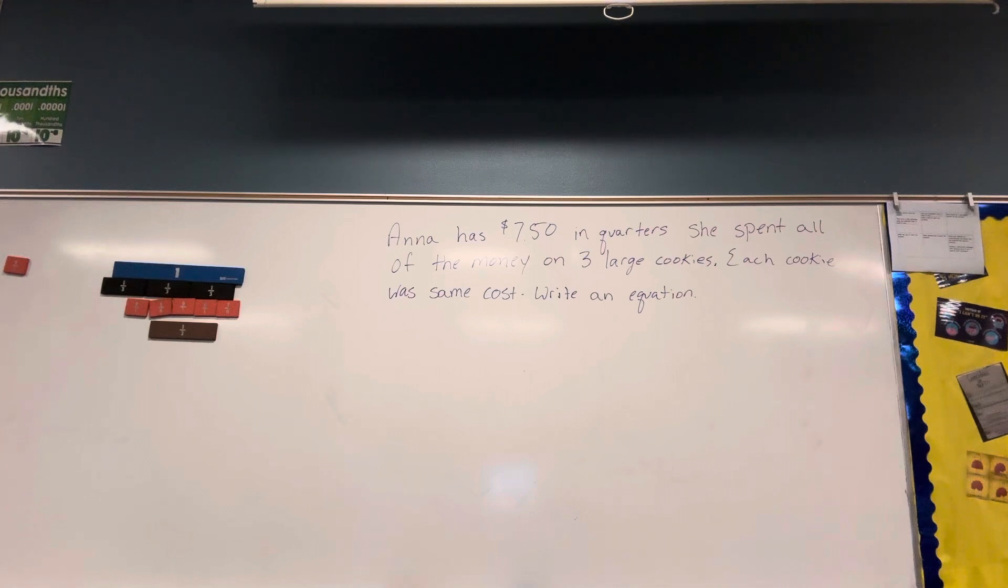So Keaton, is each cookie going to cost more than or less than $7.50? More. Why? How much money does Anna have? So can she spend more than $7.50?